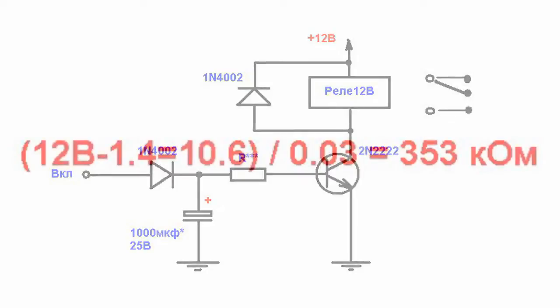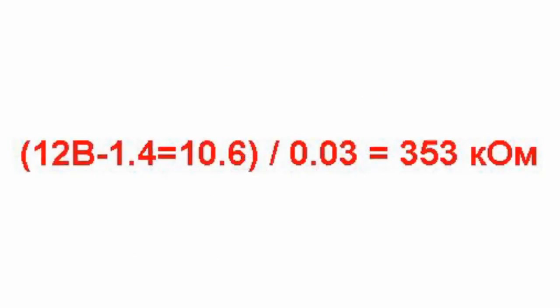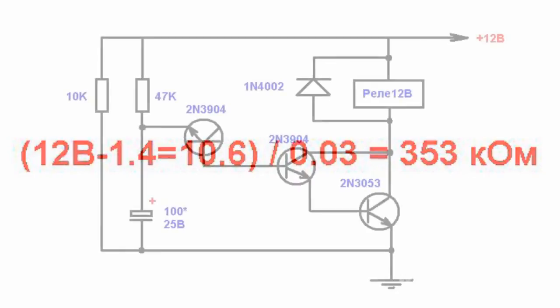For example, the resistor rating is equal to the supply voltage less the voltage drop across two diodes — that is, 10.6 volts — divided by the relay consumed current of 30 micro-amperes. So we get about 360 kilo-ohms.